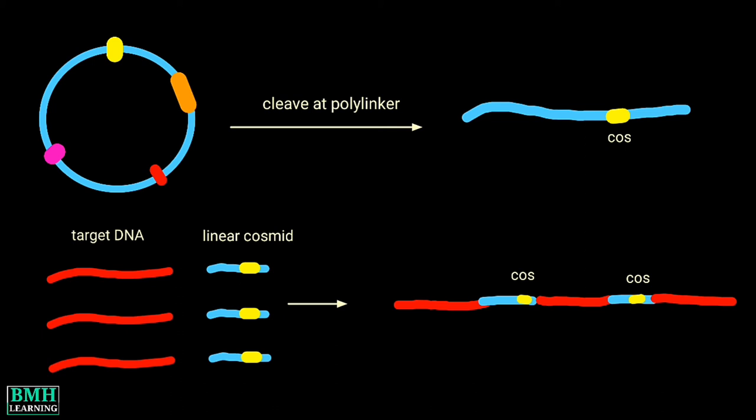These arms are then joined to the foreign DNA. The foreign DNA is also digested with the same restriction enzymes used to cut the cosmid.